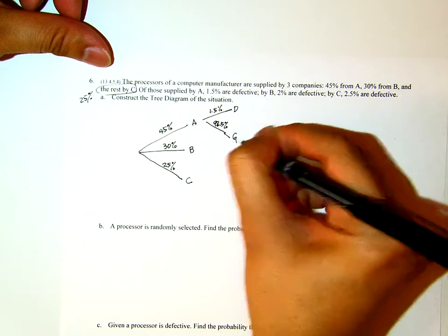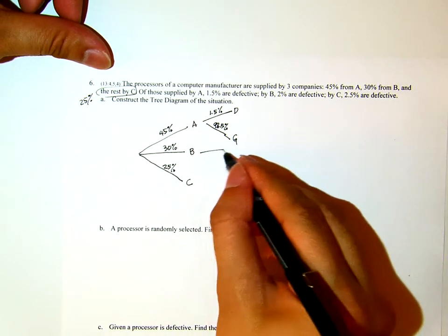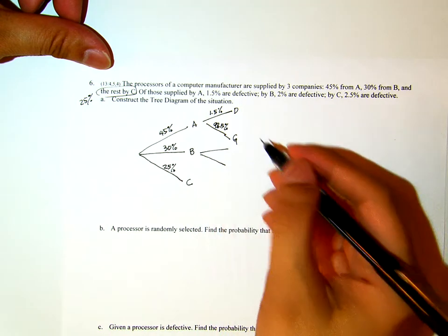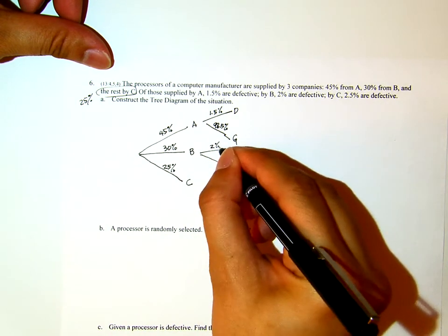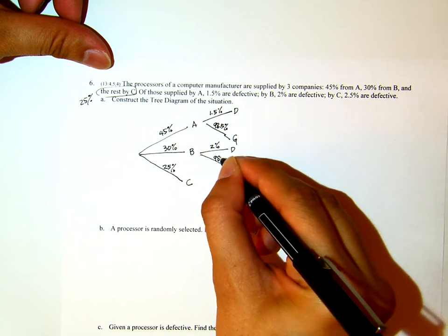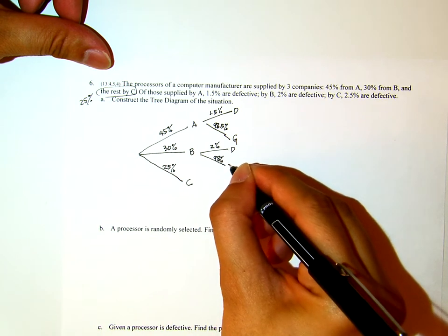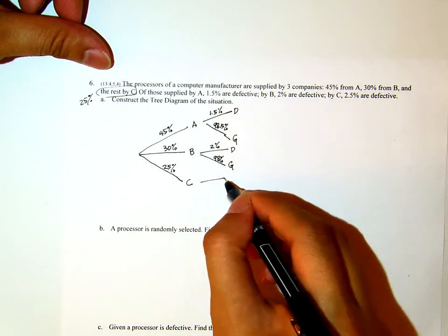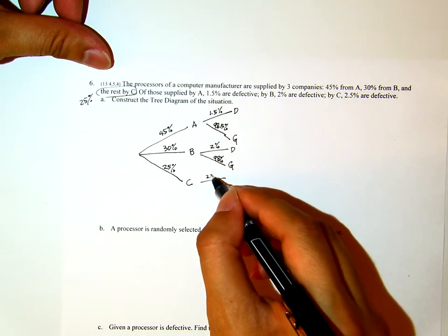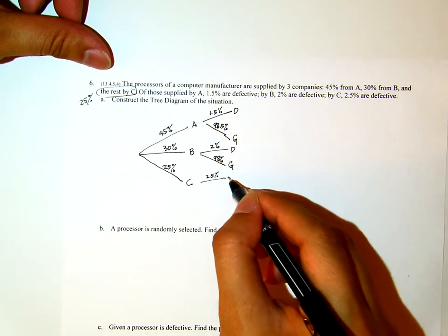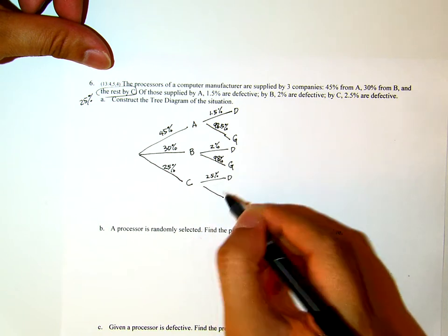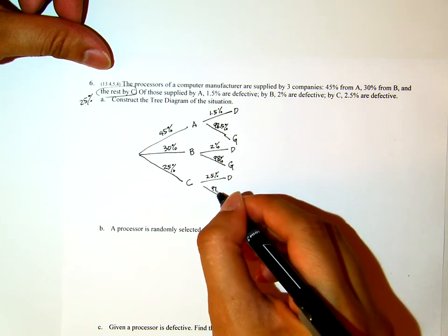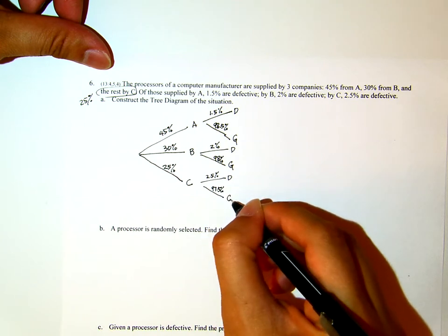And then, from Company B, 2% are defective, which implies 98% are the good ones. From C, 2.5% defective, which implies 97.5% are good ones.